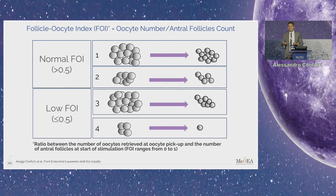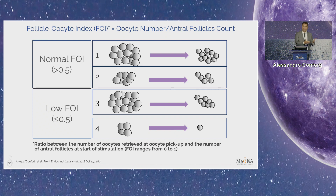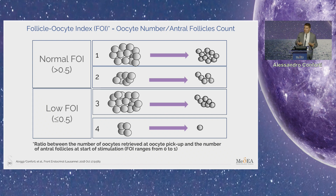What this slide clearly shows is that hyper-response is not synonymous with poor response or suboptimal response, because we could have a hyper-response profile even in women with good ovarian response who retrieve 9 to 10 eggs. In this case, what we realize is that the number of eggs retrieved is not consistent with the antral follicle count — we were not able to exploit all the potential that the patient had at the beginning of stimulation.